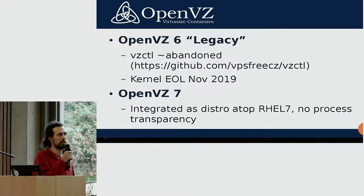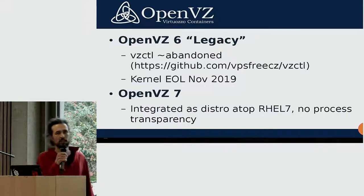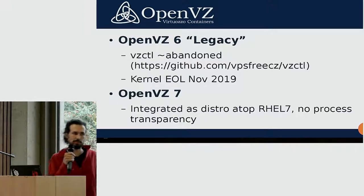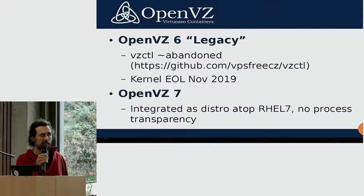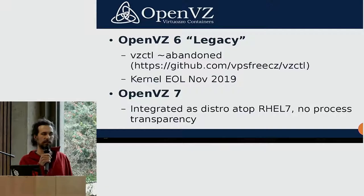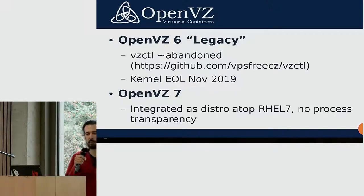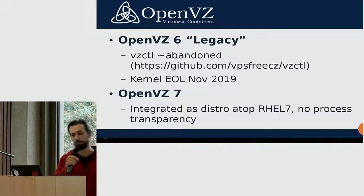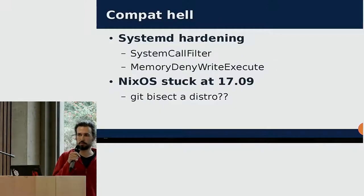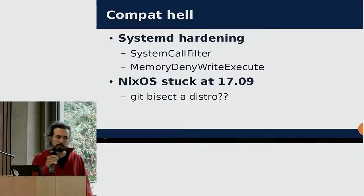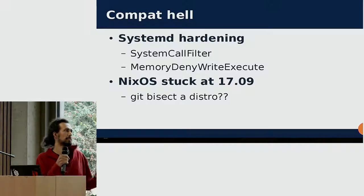So what's the deal about OpenVZ? OpenVZ is problematic for us. We are running on OpenVZ 6, which is going to be abandoned very soon. VZCTL is already abandoned — that's the tool to configure containers from user space. The kernel is 2.6-point-something, very very old. And OpenVZ 7 is also problematic because there is no process transparency, it's not a community project anymore, there are no sources, and it's based on top of RHEL 7. We don't want that.